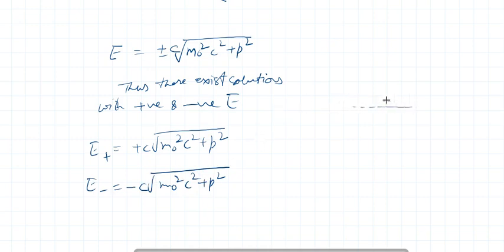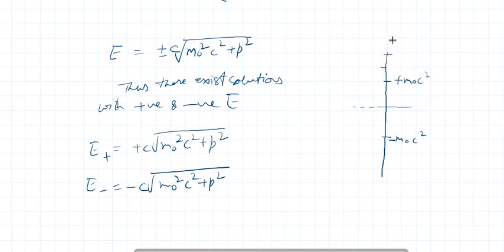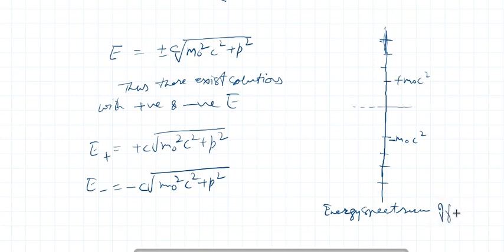If this is the reference line, then minus m₀c² is the minimum — the lowest possible value — and plus m₀c² and higher values can take different discrete values. This gives us the energy spectrum of the free particle using the Klein-Gordon equation.